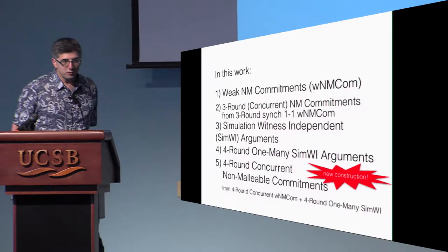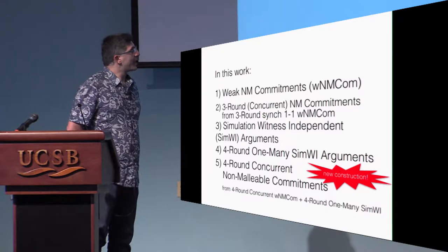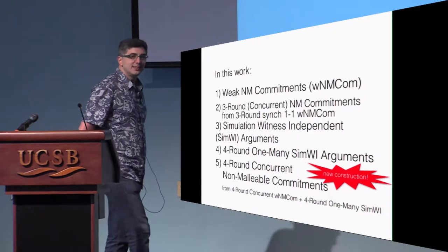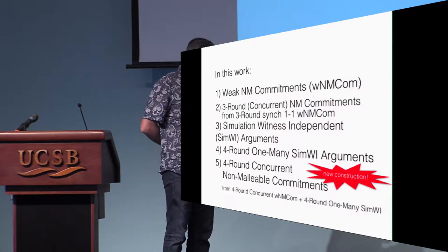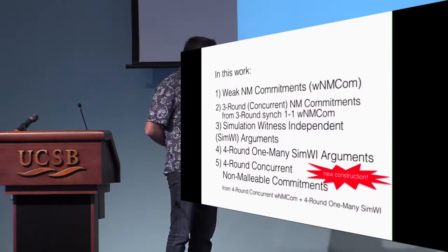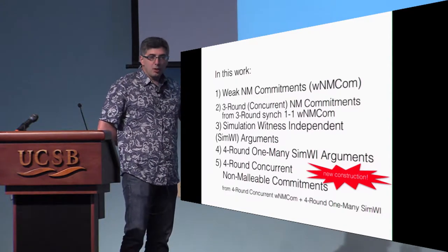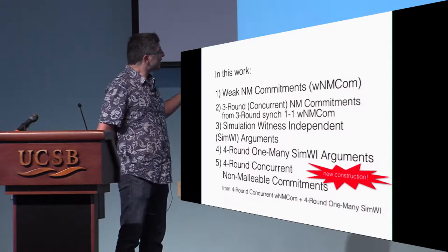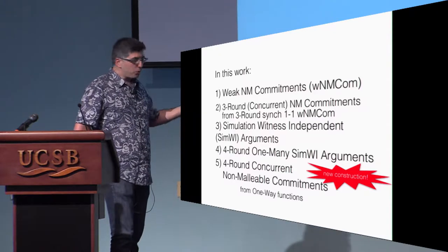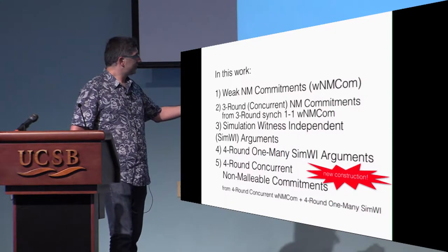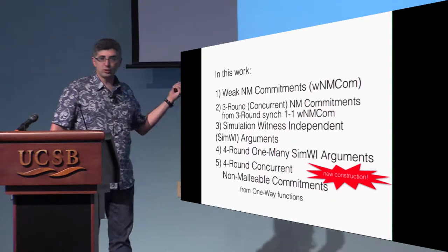Finally, that's the title of the paper: we put these pieces together to get a four-round concurrent non-malleable commitment scheme. The construction is absolutely modular, making use of these two tools together, which is very important — if one instantiation has a bug, the result still stands because you can instantiate it in multiple ways. Both tools can be implemented under one-way functions, so the final result only requires one-way functions.